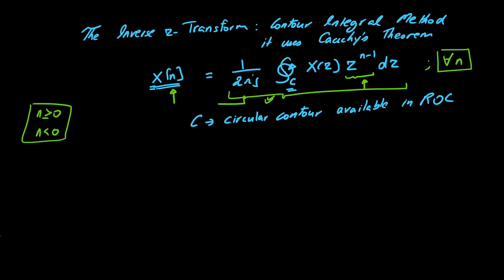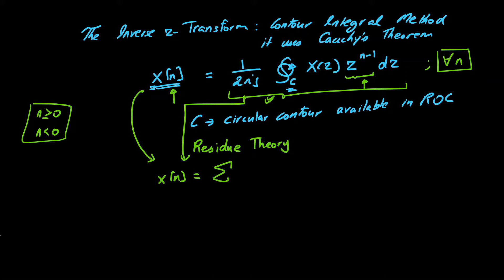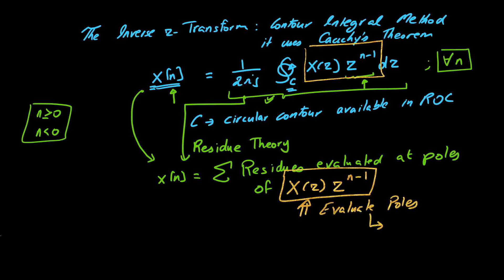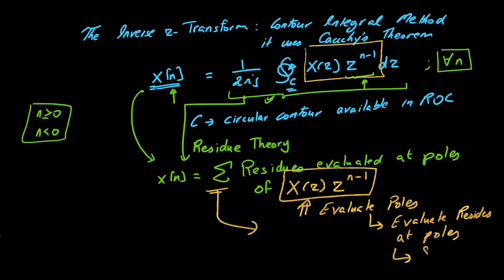The contour integration can be solved by means of residue theory. This means that x(n) has a simple form: it is the summation of residues evaluated at the relevant poles of the function X(z)·z^(n-1). We must evaluate the poles of this function and then compute the residue at each pole, and finally sum all residues.